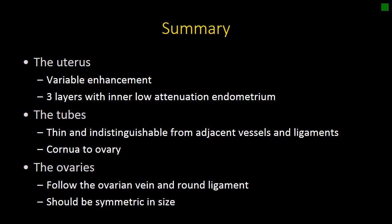In summary, the uterus is a challenging organ to evaluate because of its variable enhancement. Familiarize yourself with the variance of normal so you can recognize abnormalities. Remember that the uterus has three layers and that the inner layer on CT is low attenuation and shouldn't be mistaken for fluid. The fallopian tubes are often hard to see — they tend to be indistinguishable from the mesovarian vessels and adjacent ligaments, but they always extend from the uterine cornea to the ovary. When looking for the ovaries, use the ovarian vein and round ligament to triangulate their location, and make sure to evaluate their size and for the presence of any complex lesions.